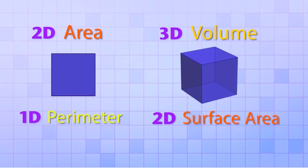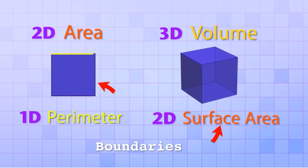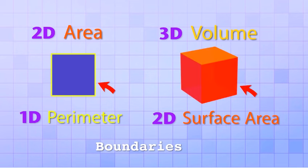Surface area is a lot like it sounds. It's the area of the object's outer surface or shell. Perimeter and surface area are both outer boundaries of geometric shapes. Perimeter is the one-dimensional outer boundary of a two-dimensional shape, and surface area is the two-dimensional outer boundary of a three-dimensional shape.